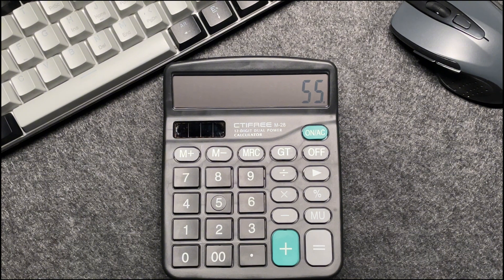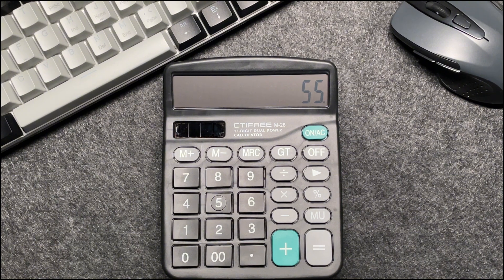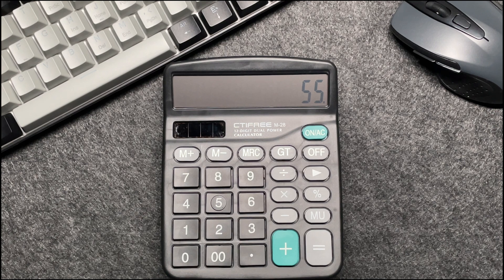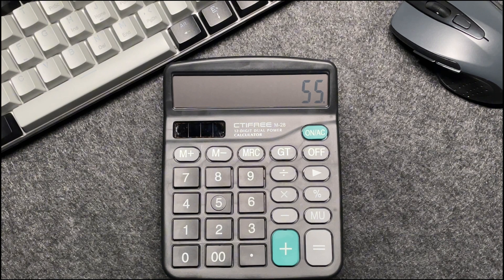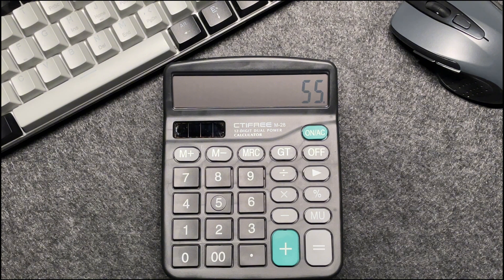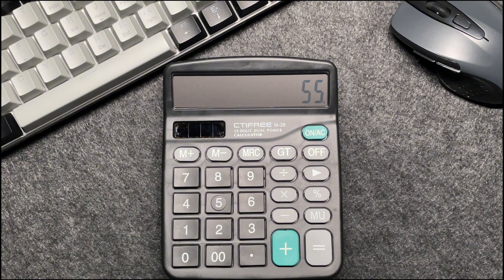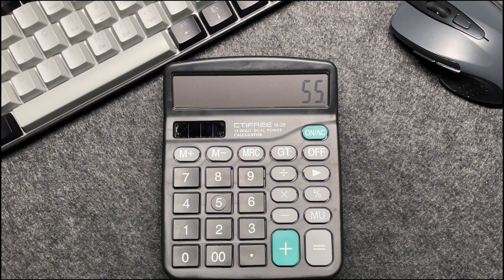If you take 45% away from 100%, you are left with 55%. In other words, paying 55% of the original price means you are saving 45%.